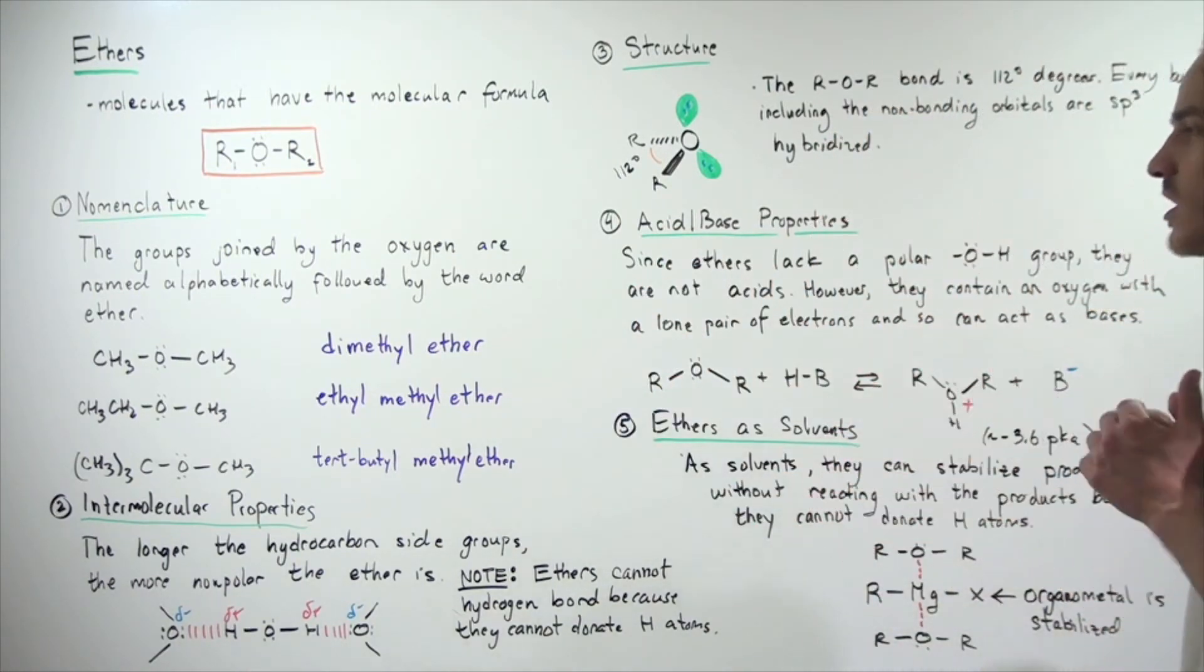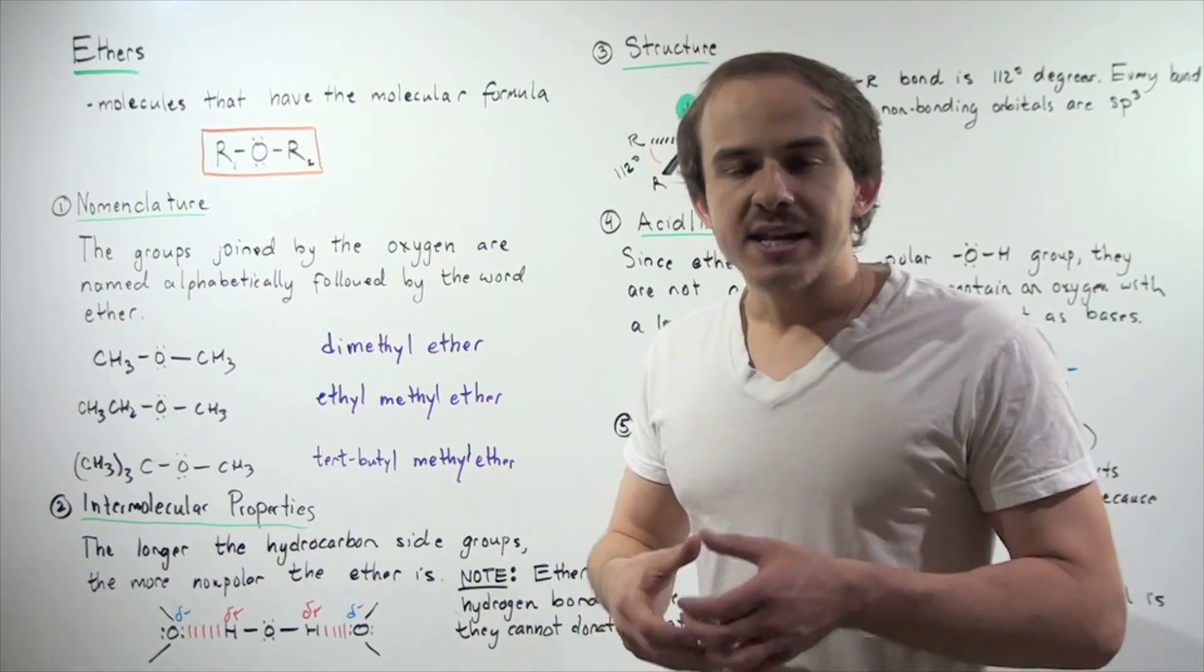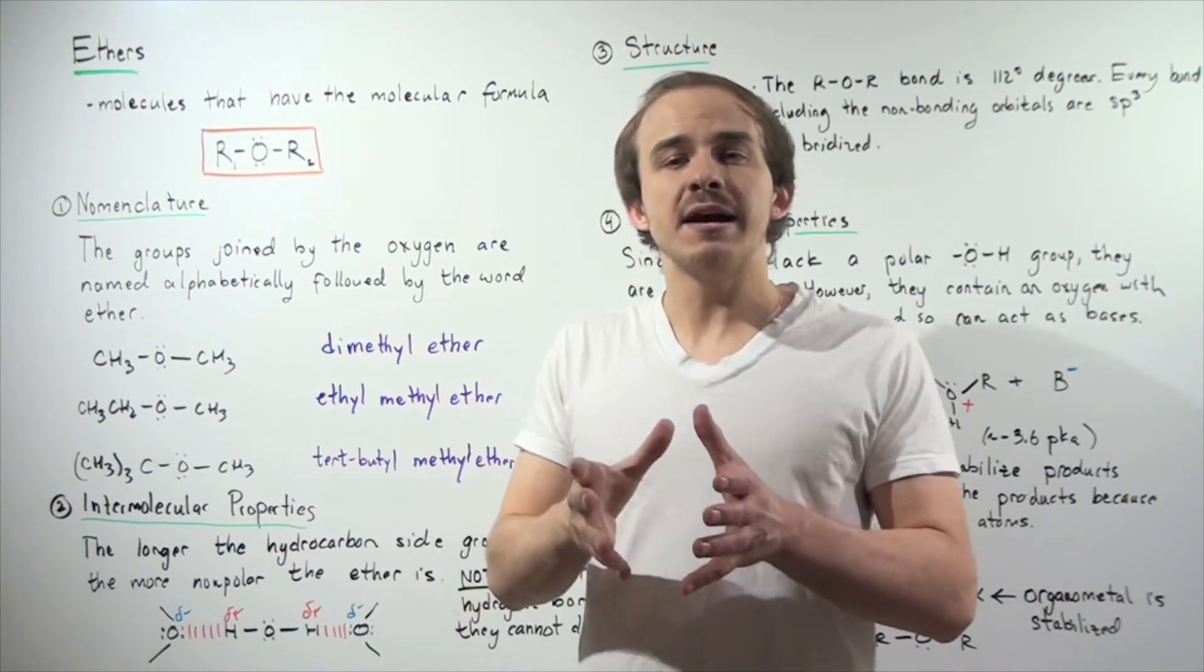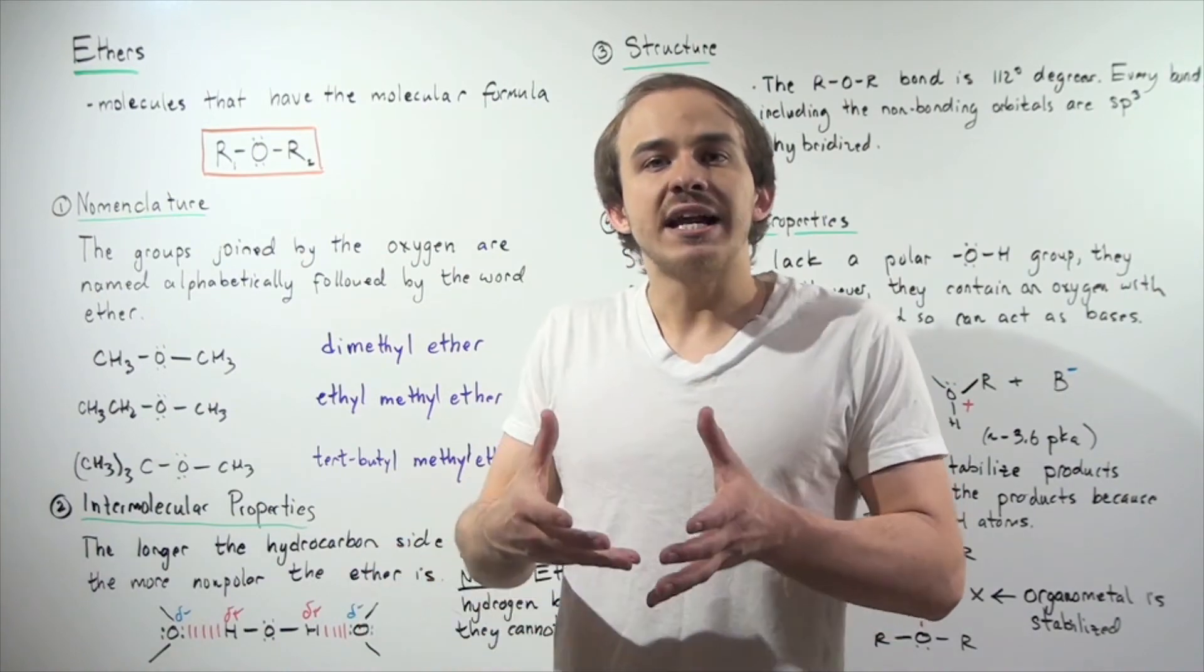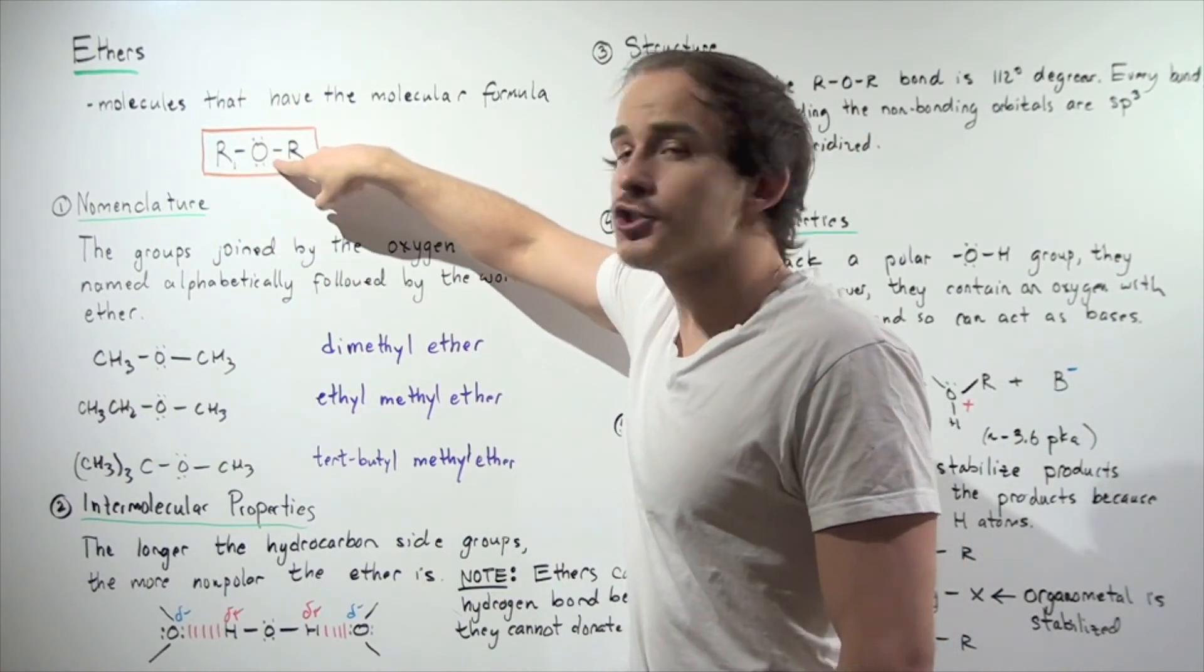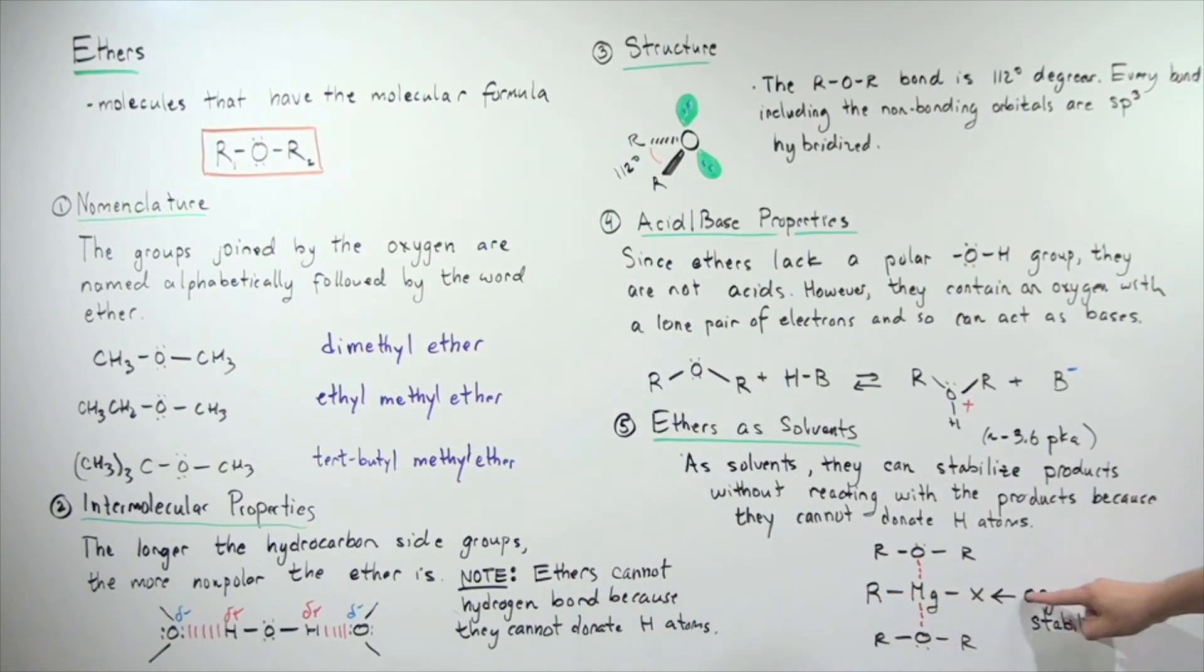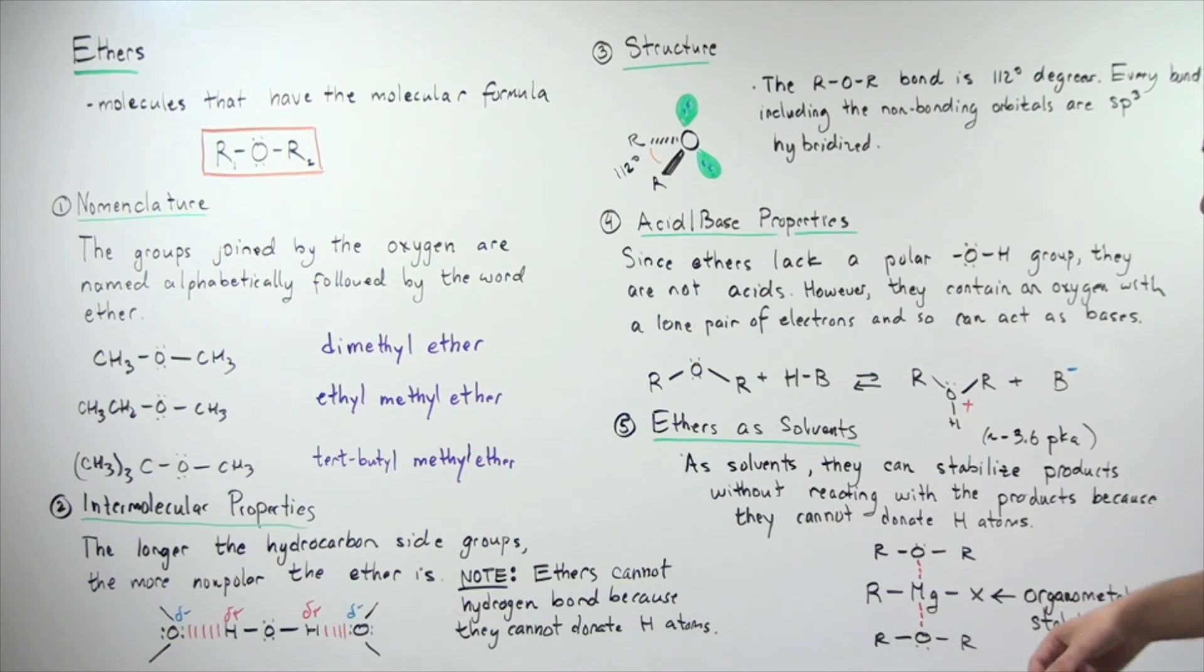The last point I want to discuss about ethers is the following. Ethers are normally used as solvents. They're very good solvents because they can stabilize our products. For example, when we're developing organometallic molecules, the organometallic molecules are stabilized by ethers because ethers have this partially negative oxygen. Here's our organometallic molecule. It's stabilized because a lone pair of electrons can bond with the magnesium metal atom.